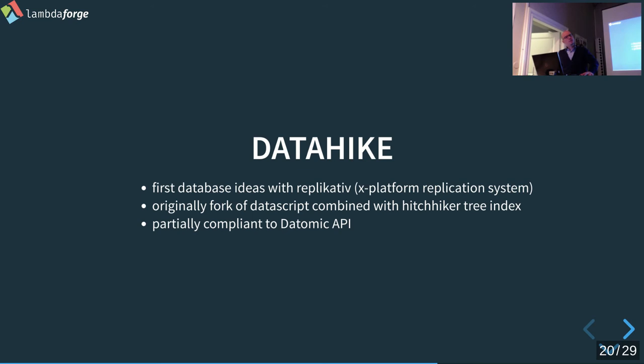In short terms, the hitchhiker tree is a tree index with an event log in the nodes of the B+ tree — yes, each node has an event log. We built a persistent layer for the hitchhiker tree because we wanted to use it.